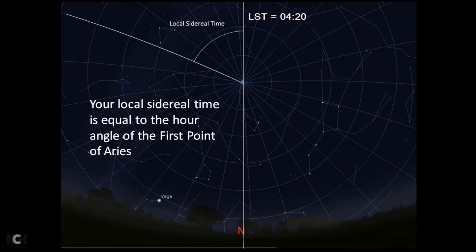Okay, so from what I've just said, your local sidereal time is equal to the hour angle of the first point of Aries. Looking at this picture here, we can see that the first point of Aries, this line that goes to the first point of Aries, is at an angle of 4 hours and 20 minutes to your local meridian. So your local sidereal time is equal to the hour angle of the first point of Aries.